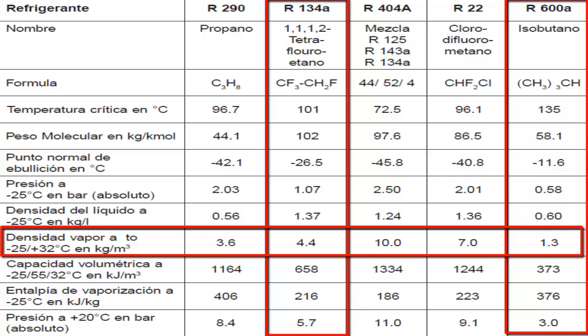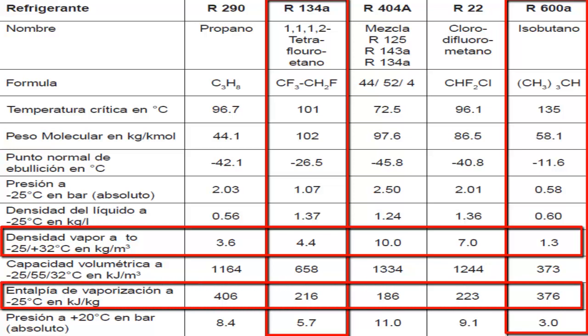In contrast, R600A is less dense, resulting in a lower flow of grams through the compressor. However, each gram of R600A has a higher cooling capacity, which compensates for its lower density.